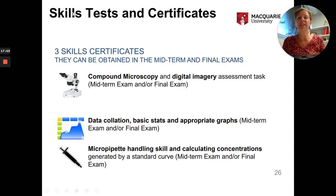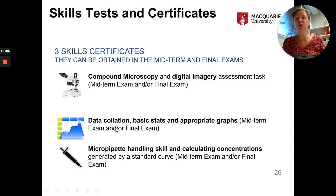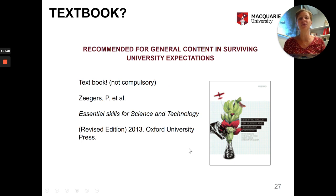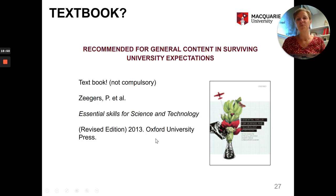There will be three skill certificates given according to the skills you acquire during the practical sessions: one on microscopy and digital imagery, one on data collation, basic stats, and graphing in Excel, and another on micropipetting skills. These certificates will be awarded based on your grades at the midterm and final exam. There is no compulsory textbook in BIOL 1620; however, the book Essential Skills for Science and Technology is recommended and has an e-version available on the library website.